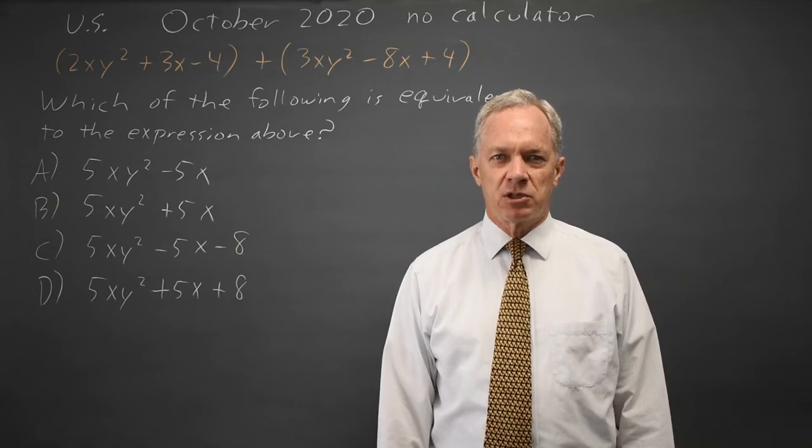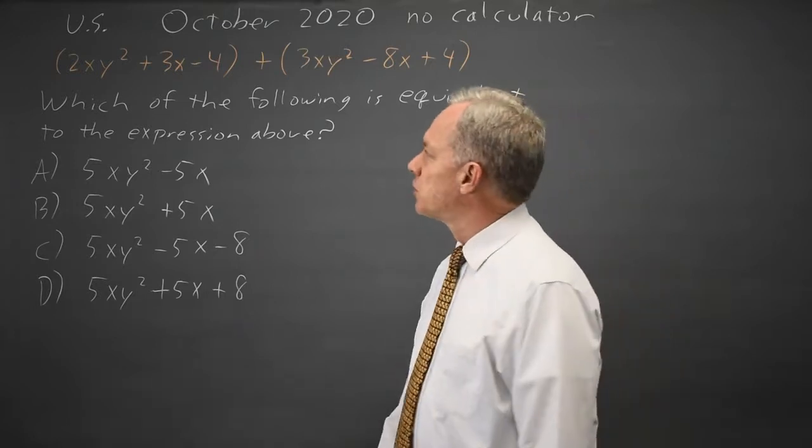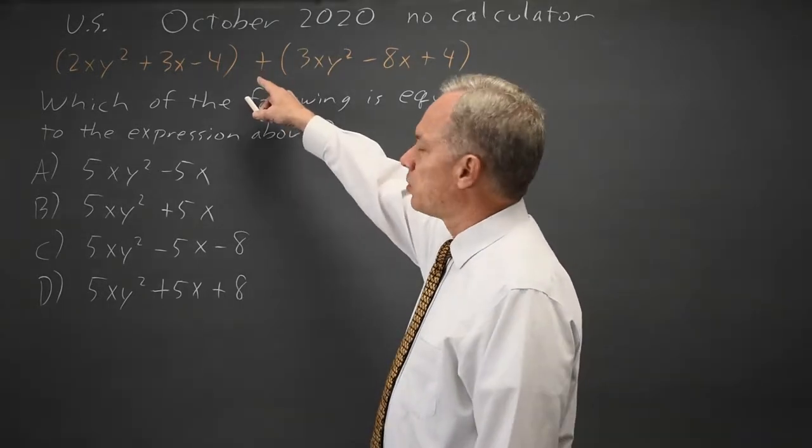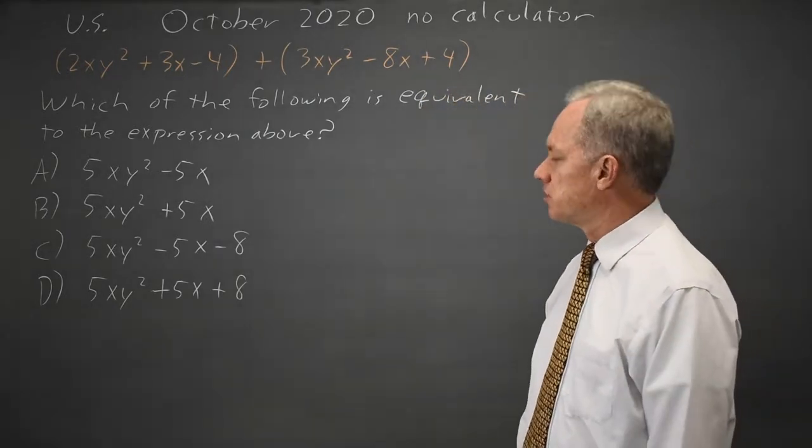This is from the October 2020 U.S. exam. The College Board is asking us to rewrite polynomial expressions with two variables, and they'll typically give you at least one of those on the exam.